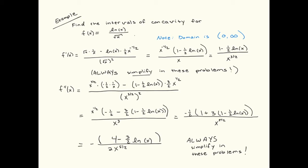I'm going to pull out x to the one-half power and simplify repeatedly until we get to something as simple as possible. Simplifying is now part of the problem — something that is new in this video and the previous one. You have to simplify, otherwise things will get way too complicated. The second derivative is equal to this simplified quantity.